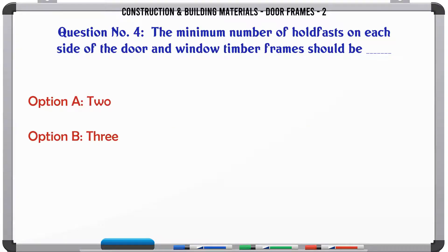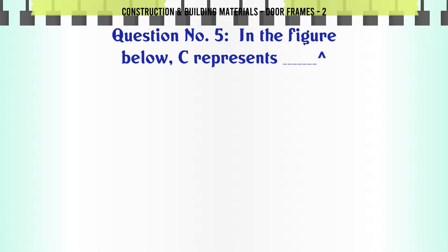Question 4: The minimum number of holdfasts on each side of the door and window timber frames should be: A. 2, B. 3, C. 4, D. 5. The correct answer is...